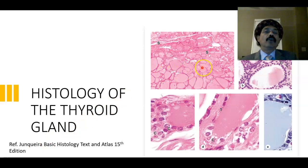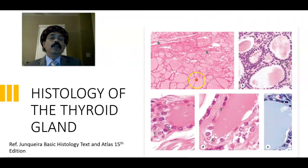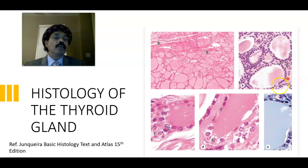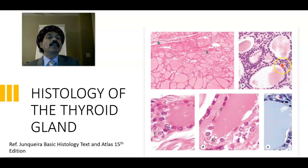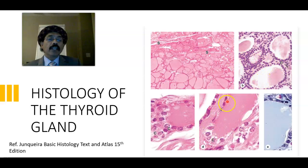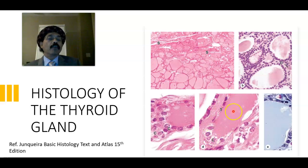In this section of the thyroid gland we see multiple follicles lined by simple cuboidal epithelium. Septa coming from the capsule of the thyroid gland are visible. We may see clear cells or parafollicular cells between the follicles. The follicular cells are also called thyrocytes or thyroid follicular cells, and the colloid inside is rich in thyroglobulin.